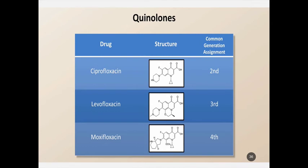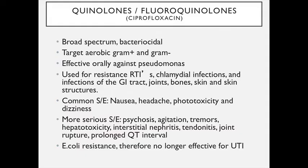Three quinolones are ciprofloxacin, levofloxacin, and moxifloxacin — these are the third generation. Quinolones are relatively new antimicrobials and were originally designed to treat urinary tract infections. They are broad-spectrum and bactericidal. They are rarely first-line agents, but are used to treat genitourinary, respiratory, GI, and some skin and soft tissue infections, including resistant respiratory tract infections, and infections of joints, bones, and soft structures.